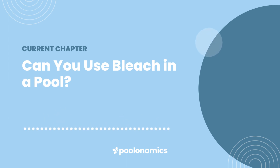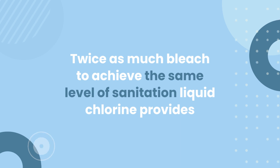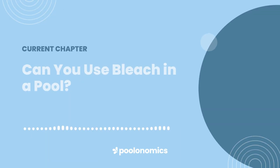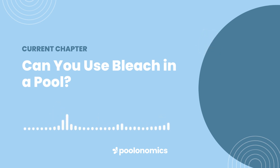For example, it would take roughly twice as much 6% bleach to achieve the same level of sanitation that 12.5% liquid chlorine would provide. Overall, while you can use household bleach to sanitize and even shock your pool, you'll need to make sure it contains no additives and be prepared to use a lot more substance than you're typically used to.